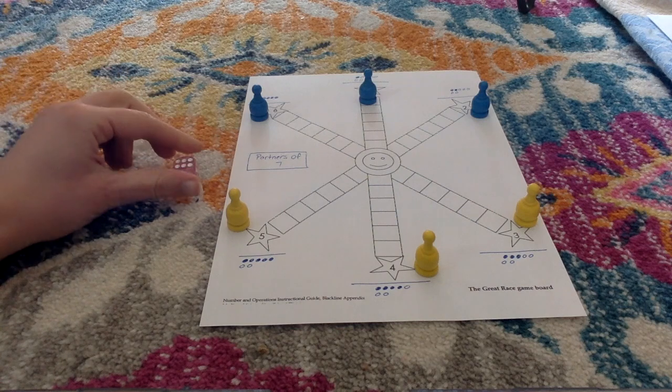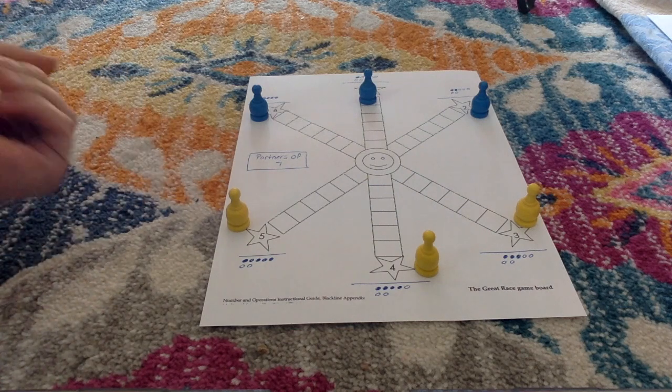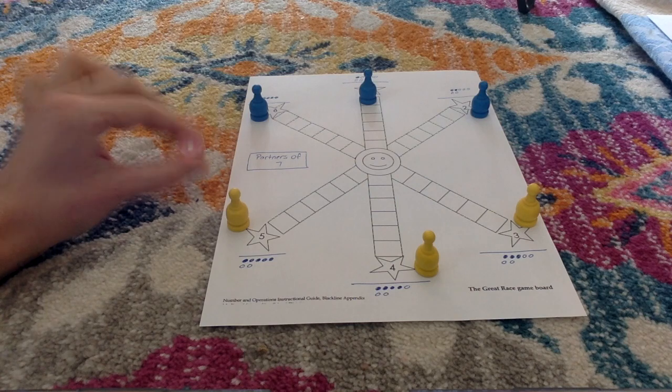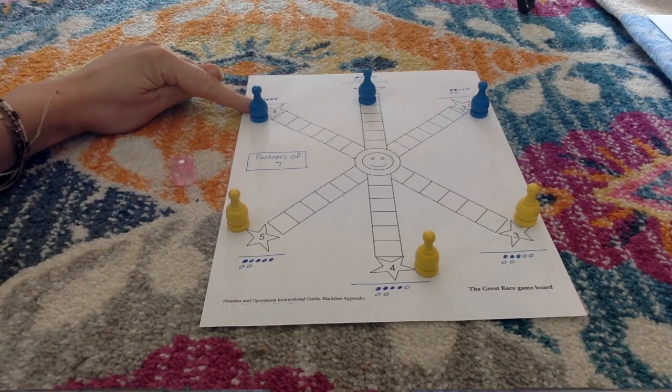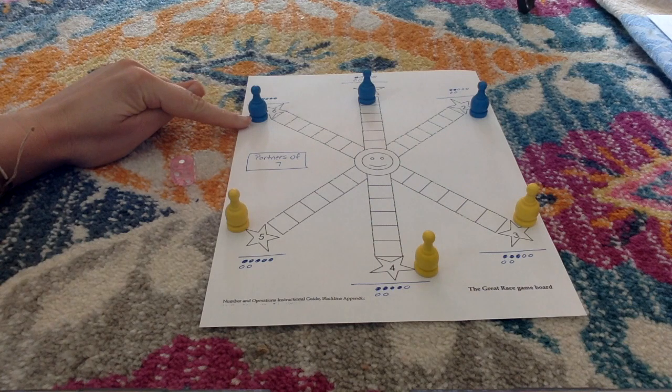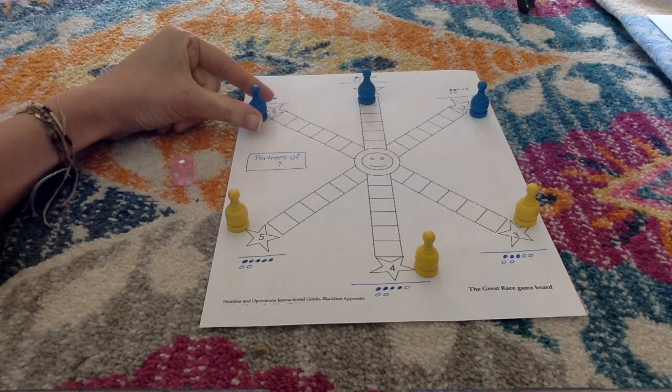Now it's the next player's turn. A one. One plus six equals seven. So the player whose pawn is next to the six gets to move one space.